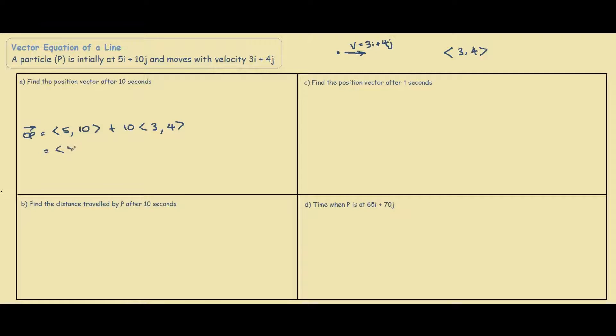So we can expand this out: 5, 10, plus 10 times the velocity vector, so we have 30, 40. And we add these up, we get 35, 50. So after 10 seconds, the new position of our particle is 35i plus 50j.